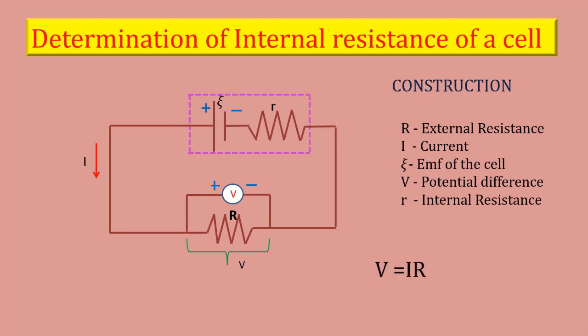The potential difference across R is equal to the potential difference across the cell V. And so, the potential drop across the resistance R is V = IR. In the circuit, R is the external resistance, I is the current flowing through the circuit, psi is the EMF of the cell, and V is the potential difference. r is the internal resistance.